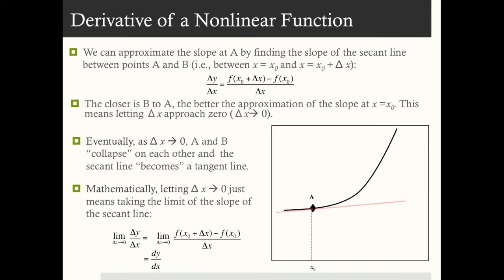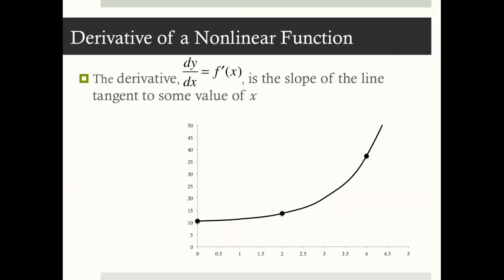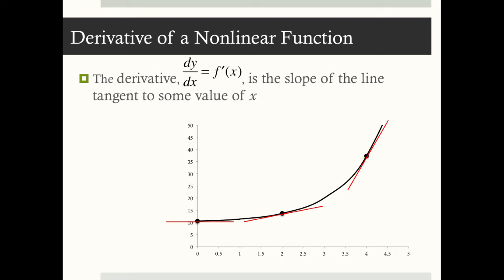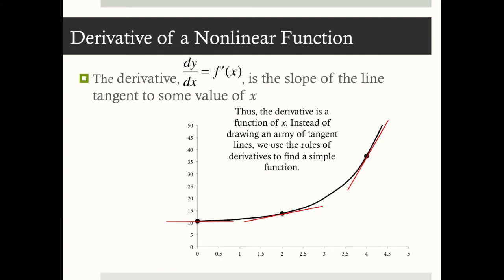We're going to take the limit of the slope formula as Δx approaches 0. One way to think about it: we let Δx approximately equal 0. When we take that limit of the slope of the secant line, we have the derivative — that's the mathematical definition. So dy/dx, or f prime of x, is the slope of the line tangent to the curve at some value of x. For example, the derivative at x equals 0 is the slope of the tangent line there, at x equals 2 it's the slope of the tangent line at x equals 2, and so on. The derivative — the slope, the rate of change — is a function of x.